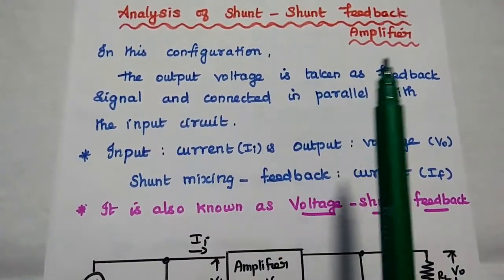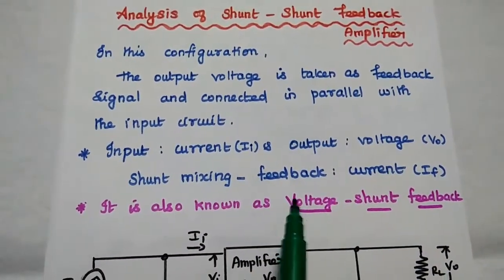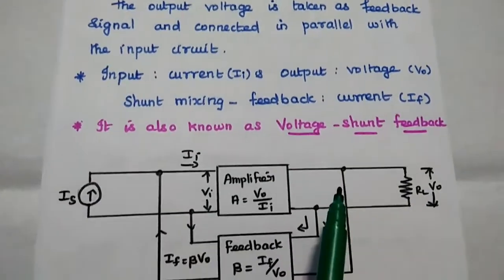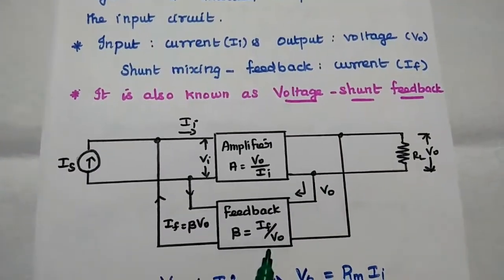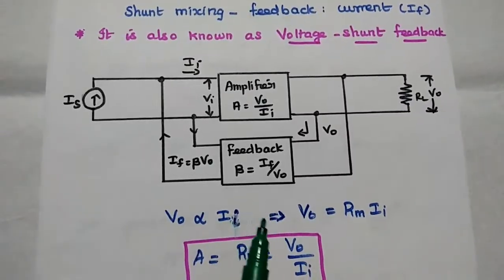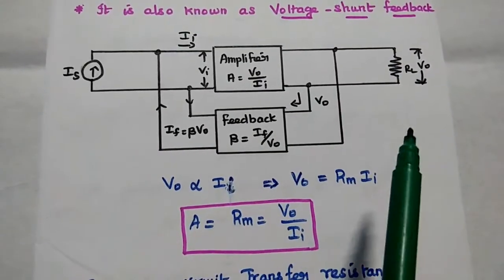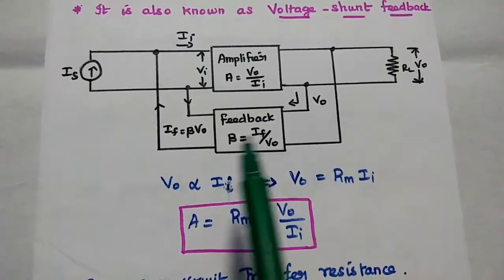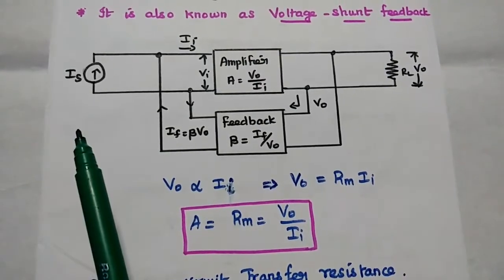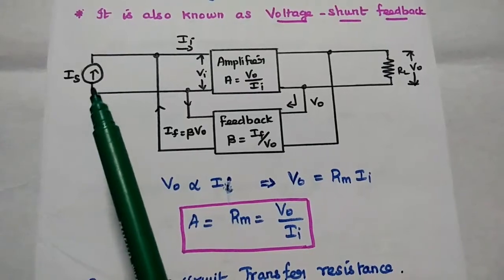The shunt-shunt feedback is also called the voltage-shunt feedback amplifier. This is the diagram of this shunt-shunt feedback amplifier. Here, the input signal is a current signal, so we can use a current source IS.